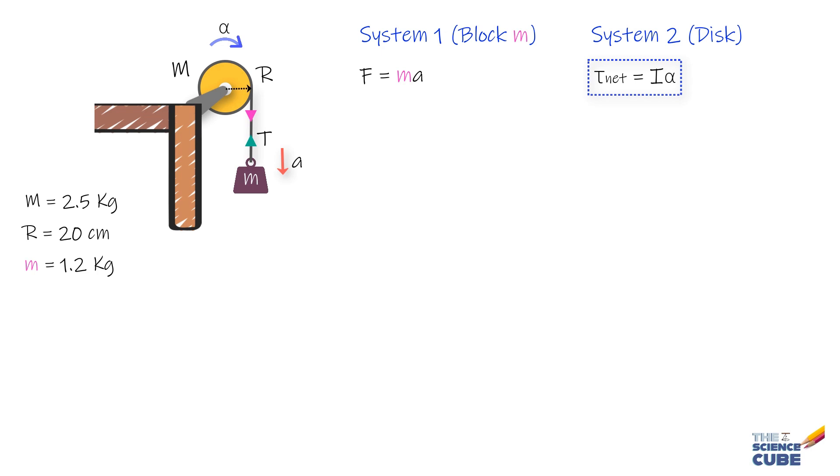And finally, combine the motion of these two systems making use of the fact that the linear acceleration A of the block and the tangential linear acceleration AT of the disc rim are the same. So for system 1,